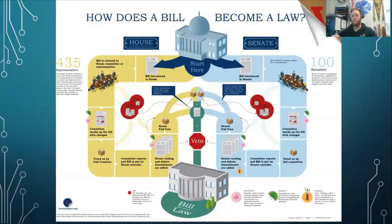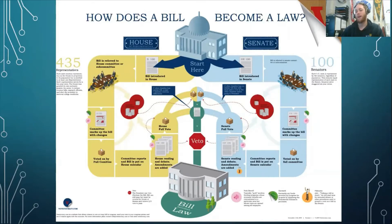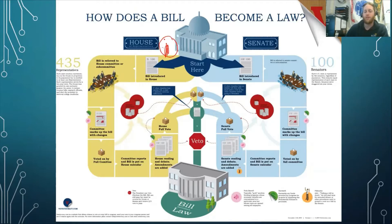The process by which a bill becomes a law is fairly complicated — there are a lot of steps. The graphic I'm using includes pretty much all of the steps that can go into a bill becoming a law. I'm going to try to summarize this to make it as easy to digest and as simple as possible. To start, a bill has to be introduced by a member of Congress, whether it's a senator or a member of the House of Representatives. In our example, the bill is going to be introduced in the House of Representatives.